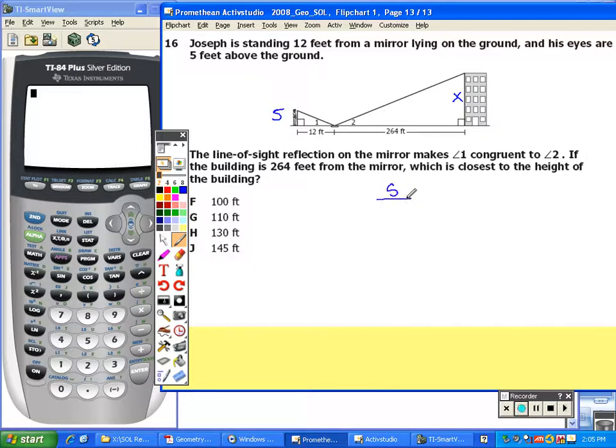I'm going to set up the height of Joseph's eyes to the height of the building, and set that equal to the distance from the mirror to Joseph, and the distance from the mirror to the building.